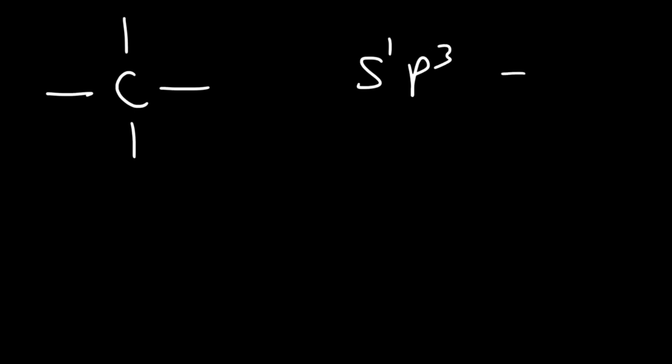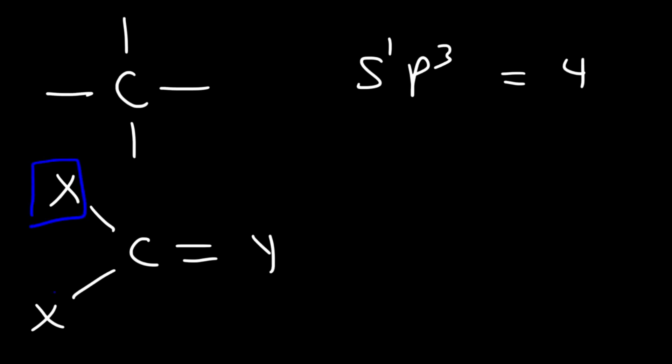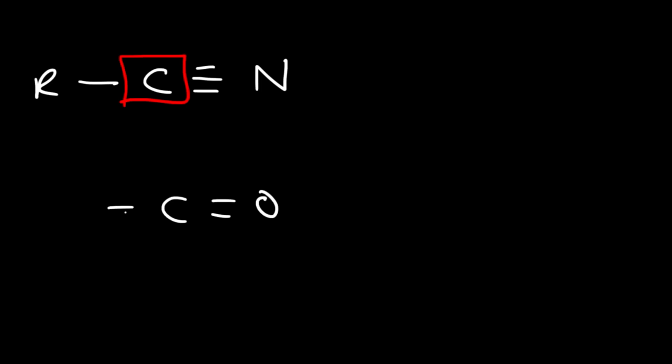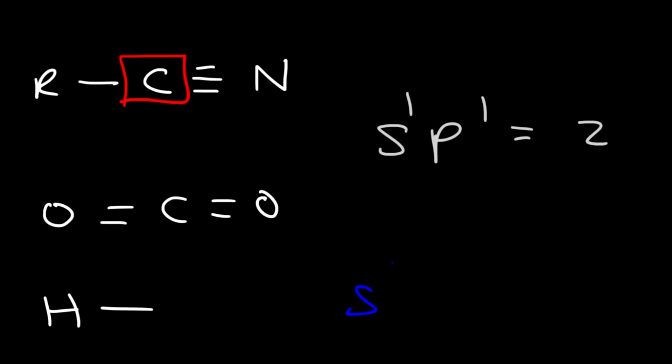Here's a quick way to determine the hybridization of carbon. If carbon is attached to four atoms, the hybridization is sp3 — the exponents add up: 1 + 3 = 4. If carbon is attached to three atoms, the hybridization is sp2 — exponents: 1 + 2 = 3. If carbon is attached to two atoms, as in carbon dioxide, the hybridization is sp — exponents: 1 + 1 = 2. For hydrogen, the atomic orbital is simply s, since it's only attached to one thing.